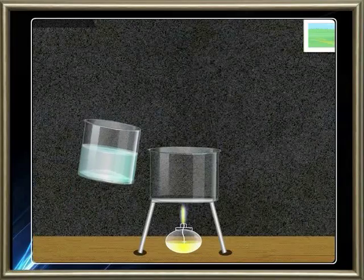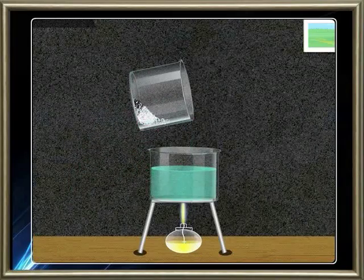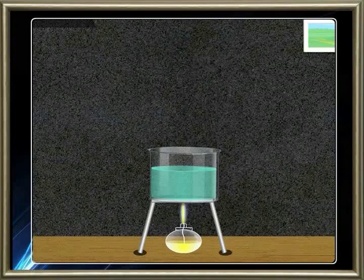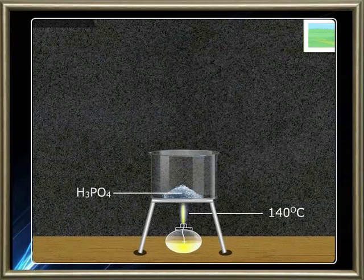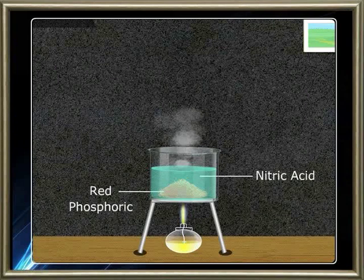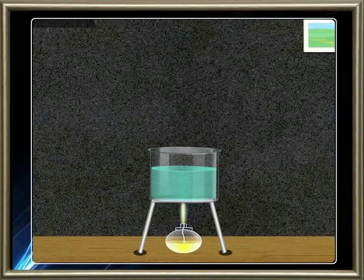The insoluble calcium sulfate is filtered off and the solution is evaporated at 140 degrees Celsius to get crystals of phosphoric acid. Heating red phosphorus with nitric acid in the ratio of 1:1 also forms phosphoric acid.